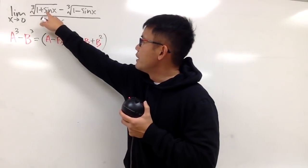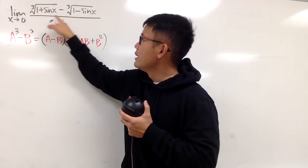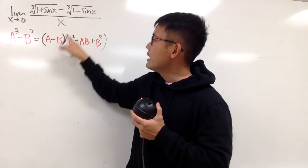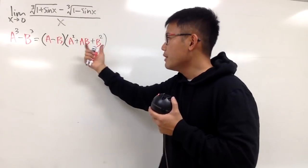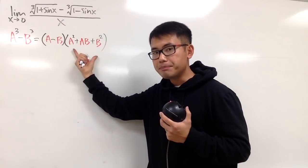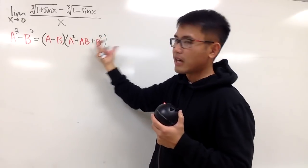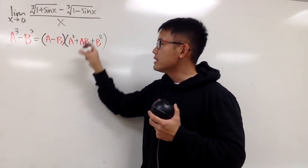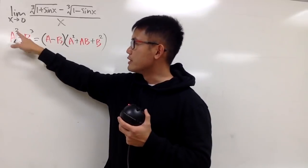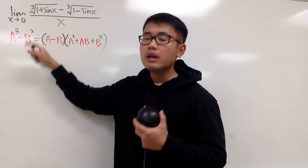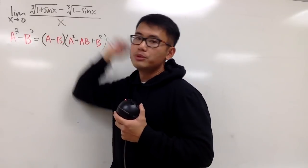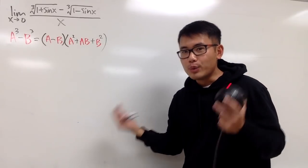And now, if you take this right here as your a, and then you see the minus, and take that as your b, as long as I multiply the top and bottom by this part, and this is kind of like the conjugate for that, because when I multiply these two together, I will get a^3 - b^3, and this is how we can get rid of the cube roots.